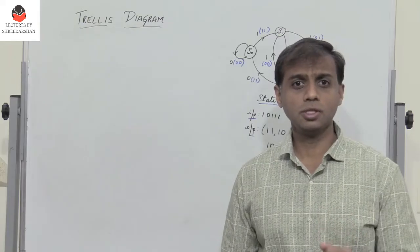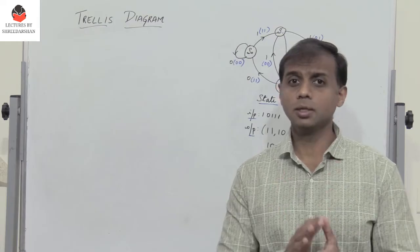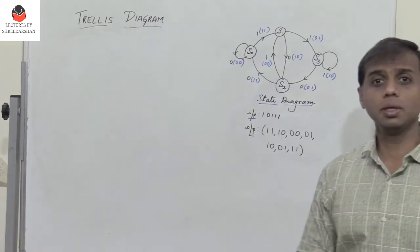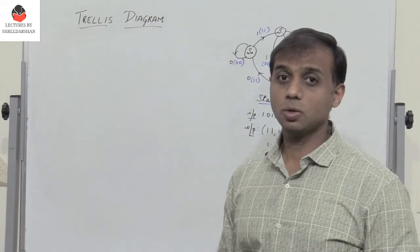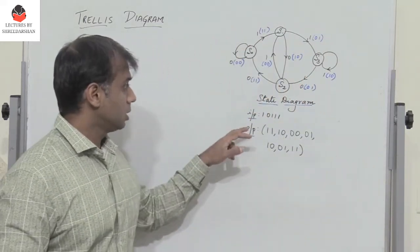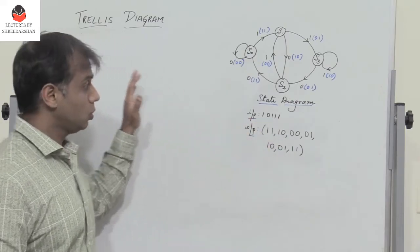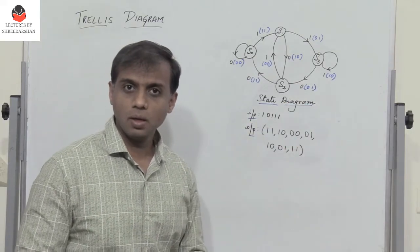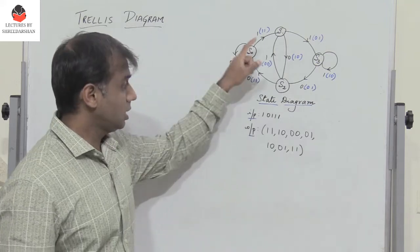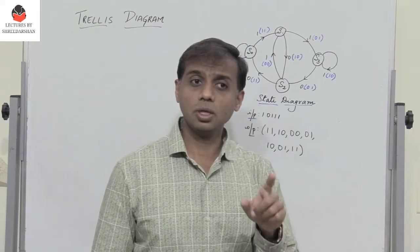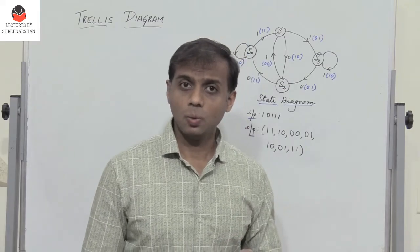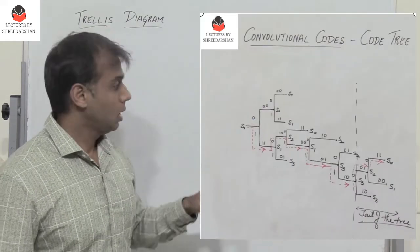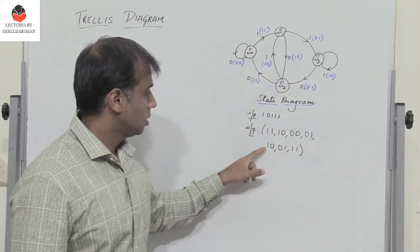Hello friends. In the previous two video segments on convolutional codes, we considered a convolutional encoder, drew the state diagram, the state transition table, and also obtained the output. We got the output by drawing the code tree, and for the input 10111, the code tree was huge. As the number of inputs increases, the code tree becomes larger and larger. I have taken the same state diagram, so make sure you go through the links in the description where I obtained the state diagram, drew the code tree, and obtained the output.